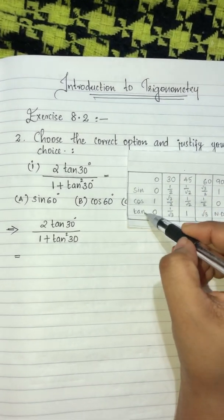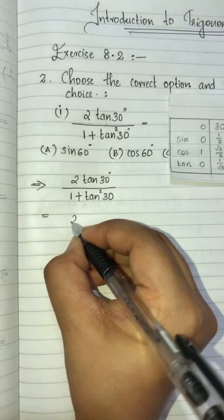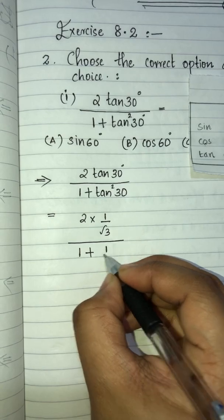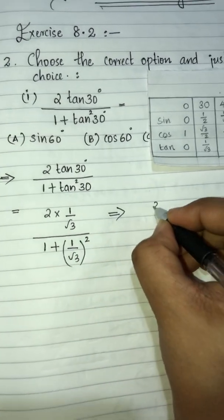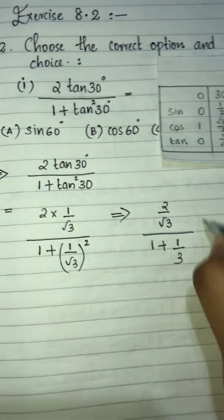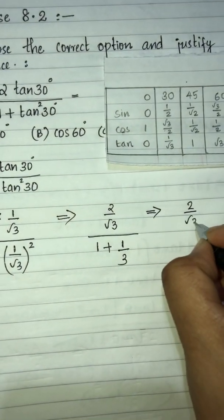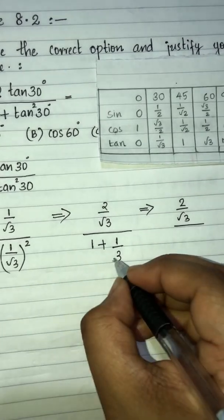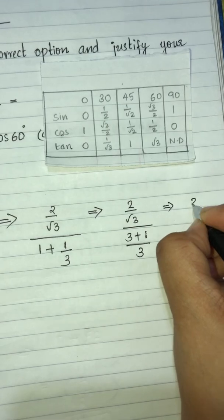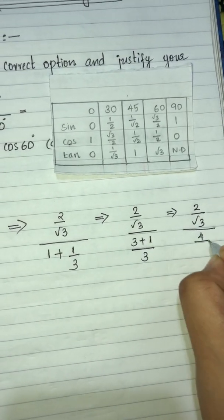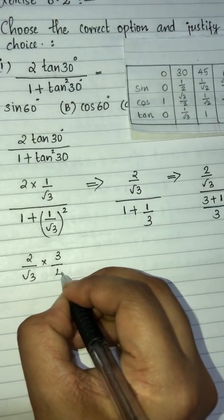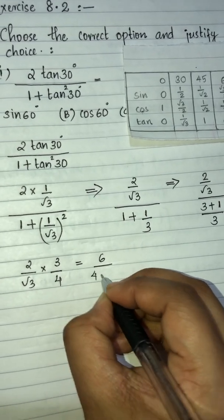tan 30 is 1/√3. So 2 × (1/√3) divided by 1 + (1/√3)². That gives 2/√3 divided by 1 + 1/3, which is 2/√3 divided by (3 + 1)/3 = 4/3. So 2/√3 × 3/4, which equals 6/(4√3).